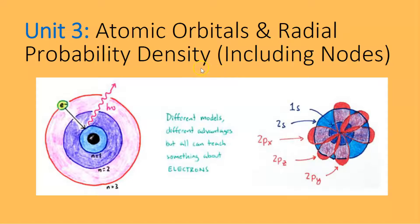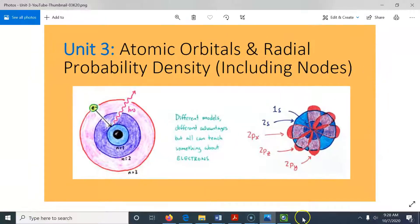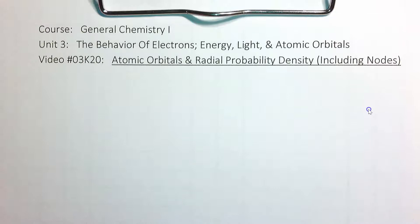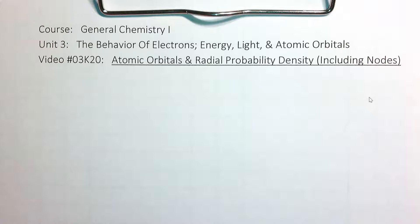You've heard of radial probability density, which is derived from the Schrödinger equation. Nodes is something new to us. A node is a volume where there's a zero probability that an electron can be found there. Let us get started with a little bit of a review, looking at a hydrogen atom.